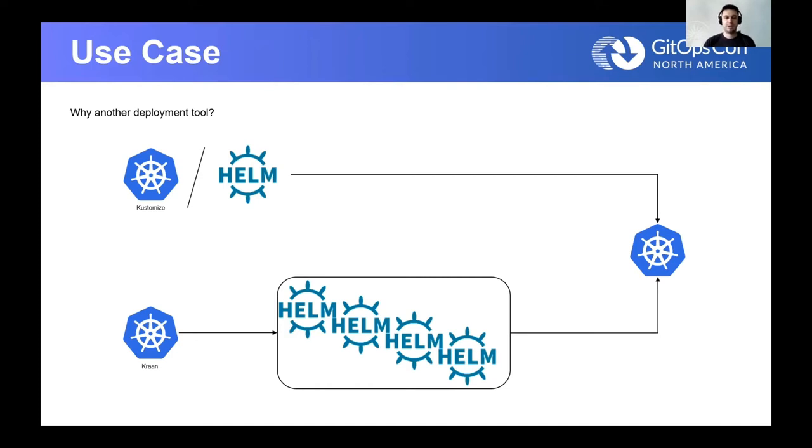Using Helm and Kustomize at the beginning works very well. You get a quick MVP, you have a fast development lifecycle, and ultimately you get working software. The problems start when you need to handle all the dependencies between add-ons, all the preconditions before installing or deleting an add-on, and implementing remediation retries if something goes wrong and doesn't work as expected.